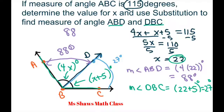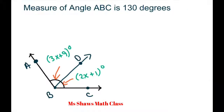So this part right here is 27 degrees, and when you add 88 degrees plus 27 degrees you get 115 degrees. We're going to do two more — if you want to pause the video and try it yourself, then check your answer. Here's another one: this time the measure of the total angle ABC is 130 degrees.